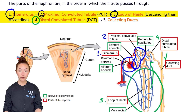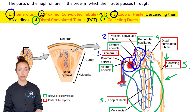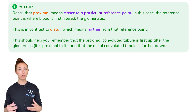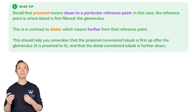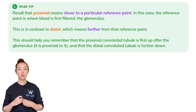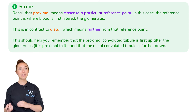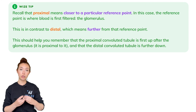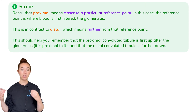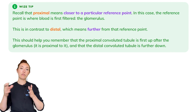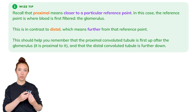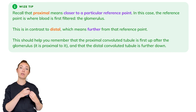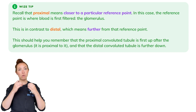Finally, the filtrate goes into the collecting duct, which is the fifth part on this list. To help memorize the order: the word proximal means closer to a reference point — in this case, the glomerulus. So the proximal convoluted tubule is closer to the glomerulus, while the distal convoluted tubule is further away. This distinction helps you keep those two sections in the correct order on the nephron.